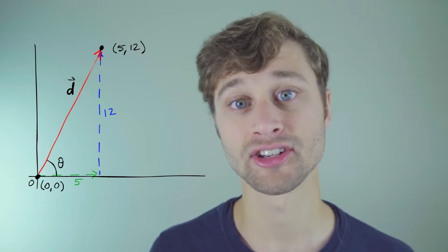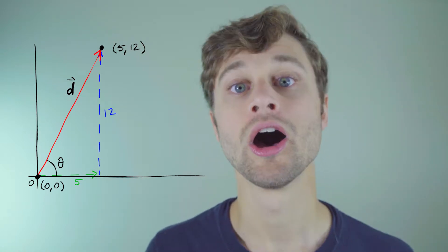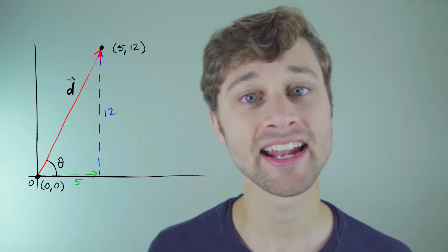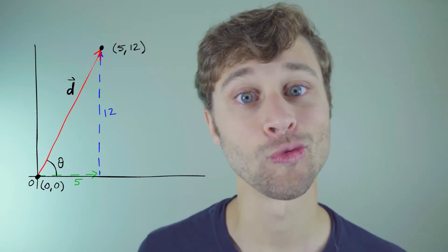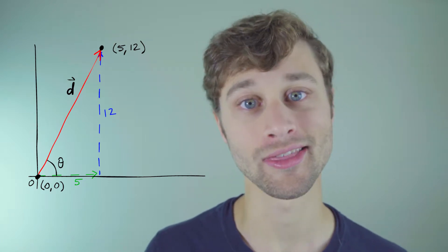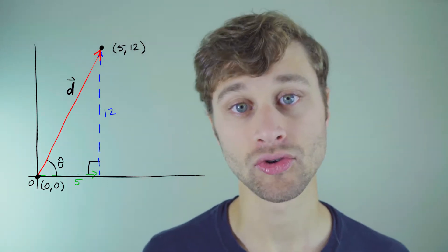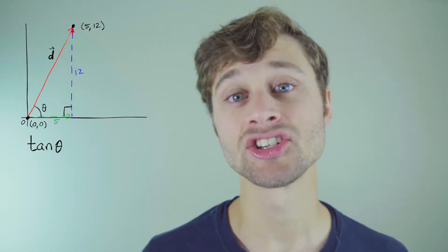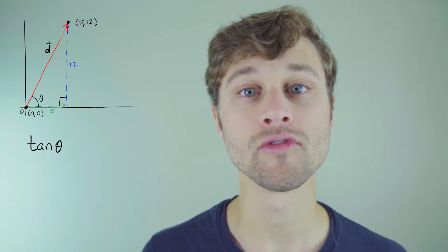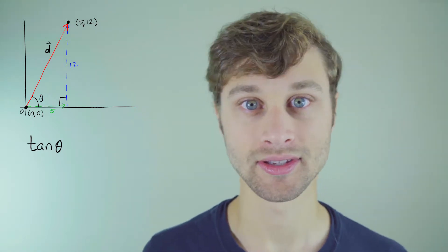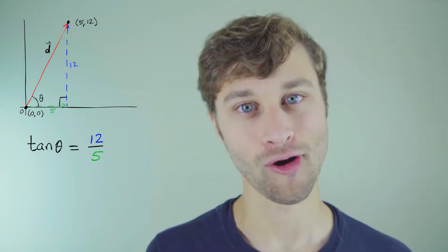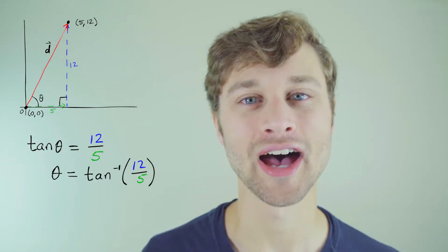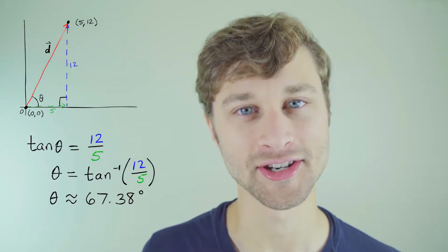And then I'm going to draw another vector that's 12 units long along the positive y-axis, just like this. I've made a right triangle — the right angle is right there — and now I can use right triangle trigonometry to solve for this angle. The tangent of theta is equal to the opposite over the adjacent side, which in this case is 12 over 5. So theta is equal to the arctan of 12/5, or about 67.38 degrees.